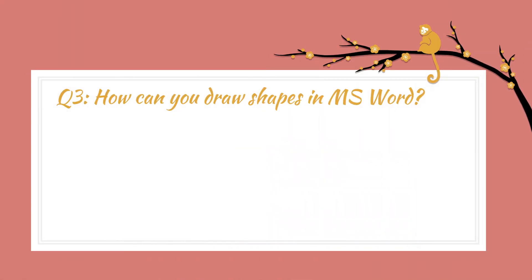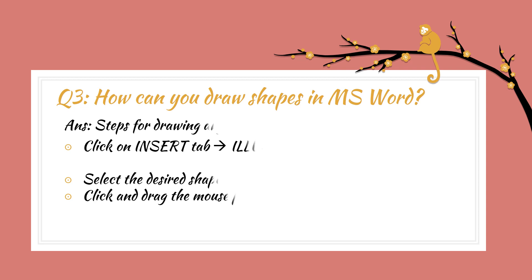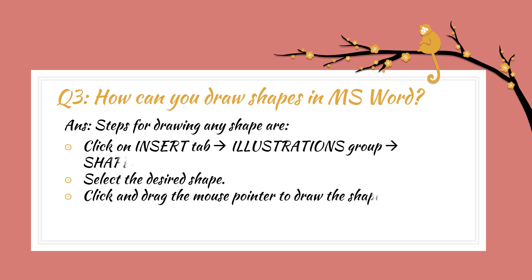Question three: How can you draw shapes in MS Word? Steps for inserting any shape: firstly, give the command — click on Insert tab, Illustrations group, Shapes option. Then select the desired shape you want to insert, click and drag the mouse pointer to draw the shape at the desired position on the MS Word document.